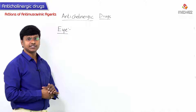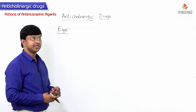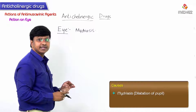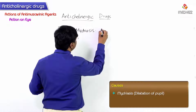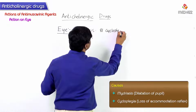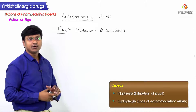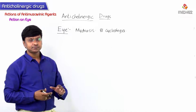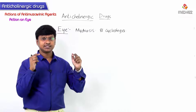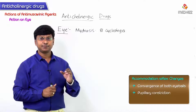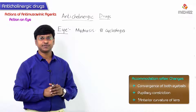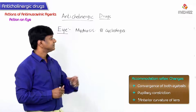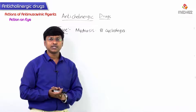Let me discuss the action of anticholinergic drugs on the eye. These drugs will cause mydriasis, which is the dilatation of the pupil, and they will also cause cycloplegia. Cycloplegia is the loss of accommodation reflex. In accommodation, there are three important changes: convergence of both eyeballs, pupillary constriction, and increase in the anterior curvature of the lens. When there is loss of accommodation, that is called cycloplegia.